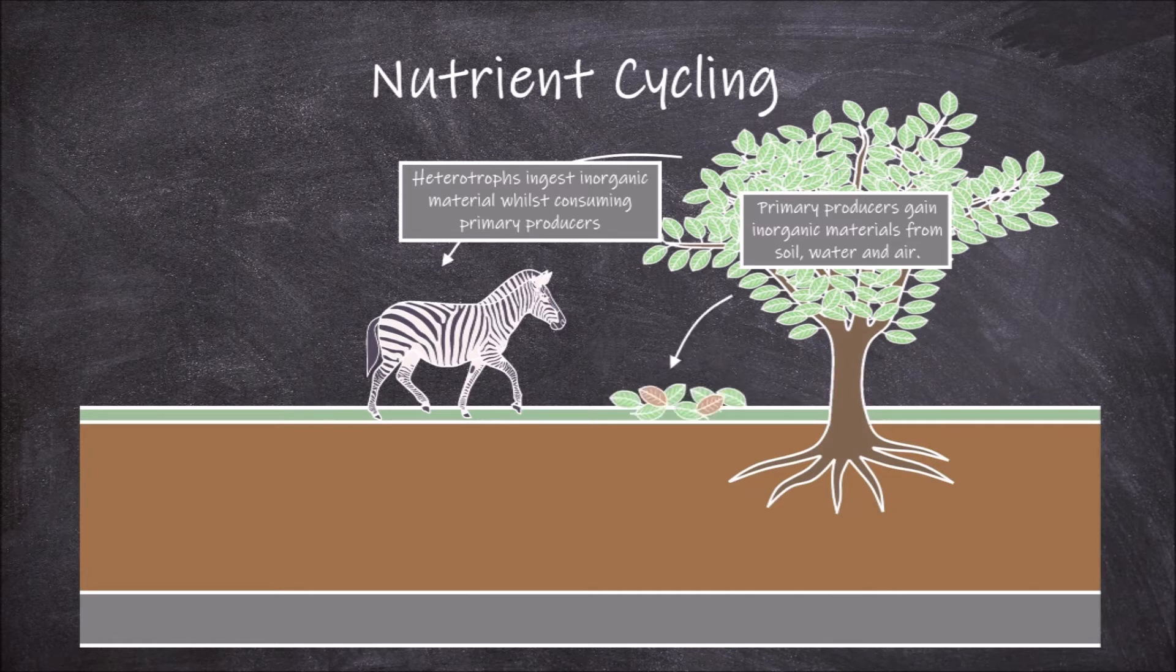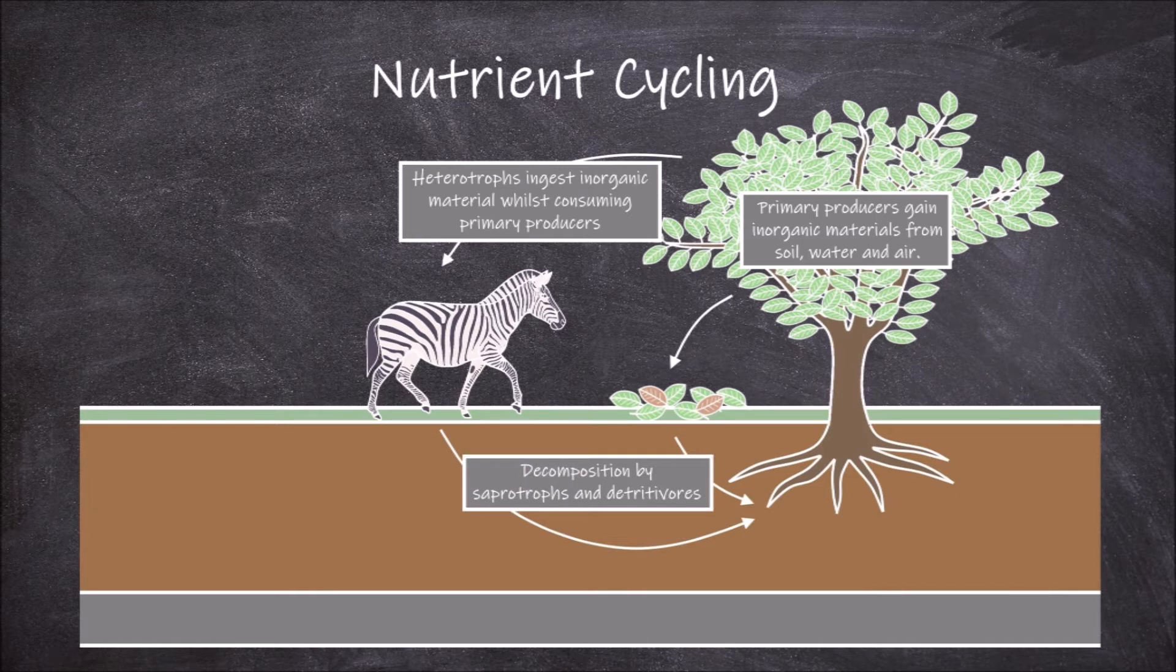When plants and animals die, organisms such as saprotrophs decompose the remains and detritivores feed on the feces and fragmented remains of organisms. This causes decomposition of the material which releases free inorganic material into the soil.